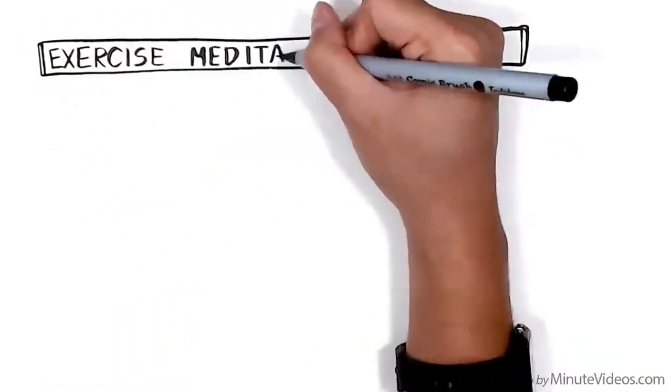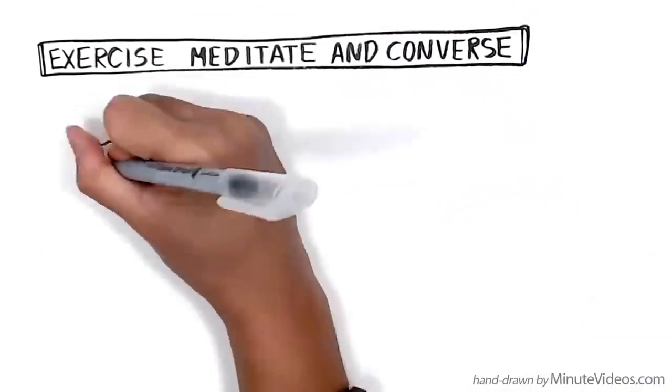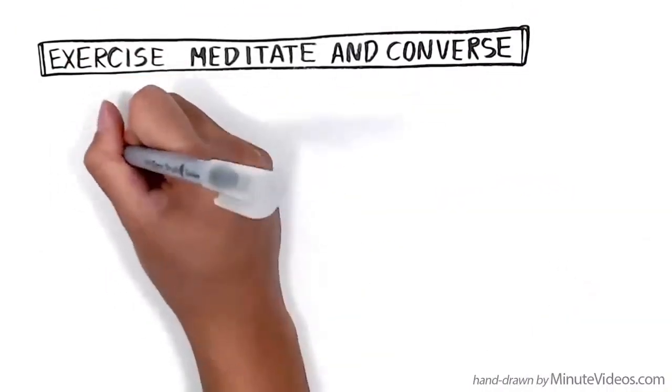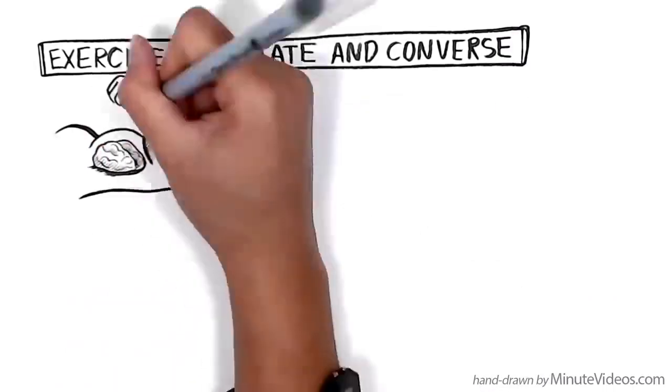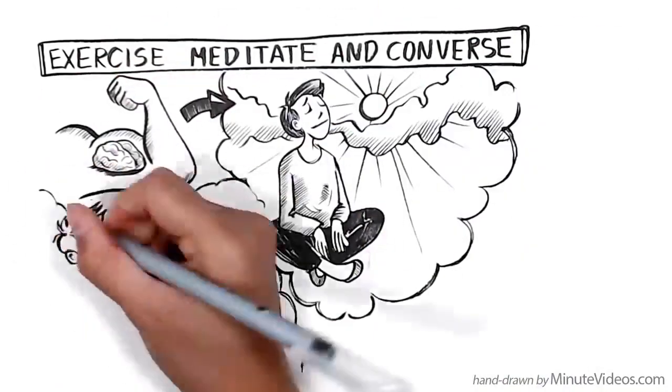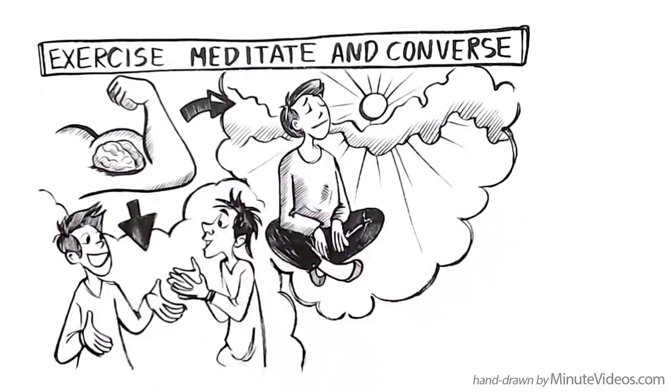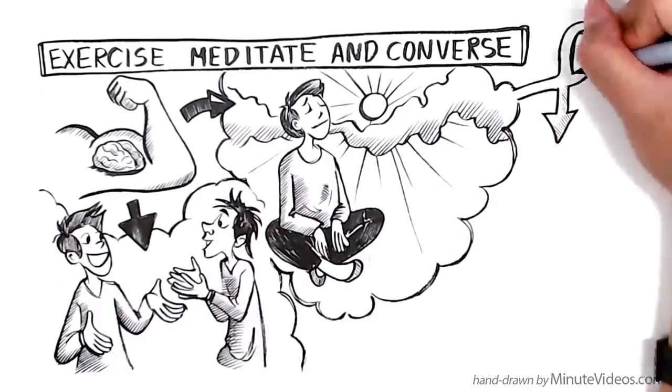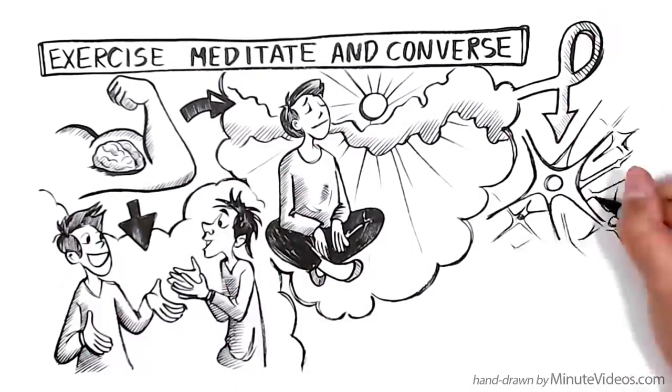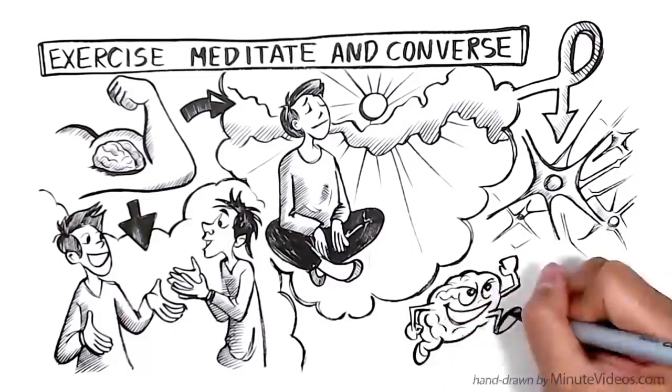Exercise, meditate and converse: There are few activities proven to grow your brain. However, physical exercise, regular meditation and good conversations apparently do exactly that. They lead to the creation of new neurons inside your brain and therefore grow its potential.